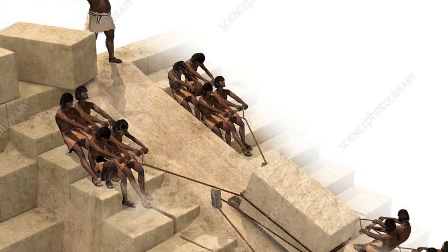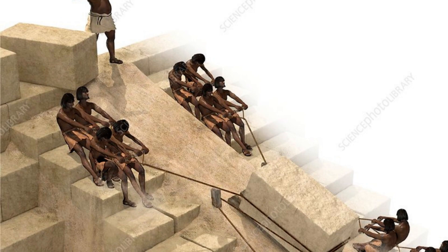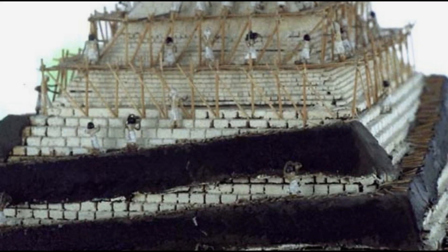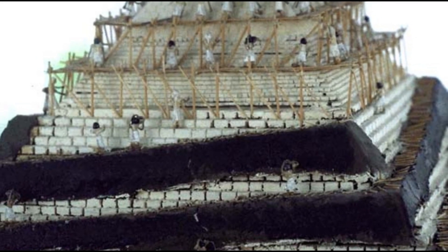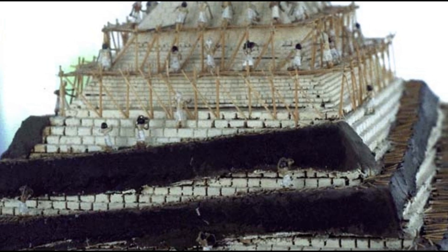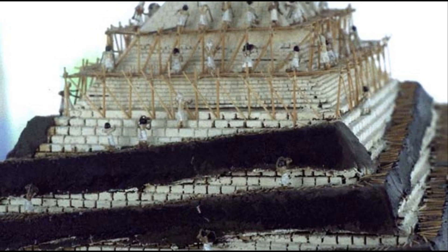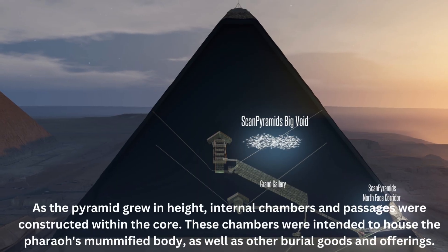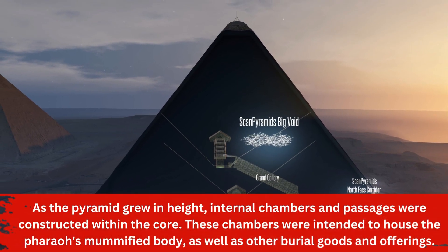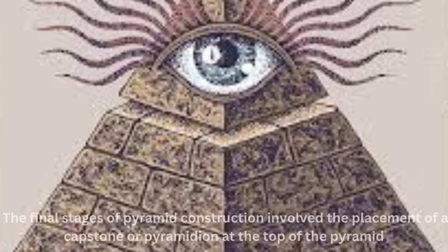The construction of a pyramid began with the laying of a foundation of limestone blocks. Once the foundation was in place, workers began to construct the core of the pyramid by building layers of limestone blocks, each layer slightly smaller than the one below it. The blocks were placed at an angle, sloping upwards towards the center of the pyramid. As the pyramid grew in height, internal chambers and passages were constructed within the core, intended to house the pharaoh's mummified body, as well as other burial goods and offerings.